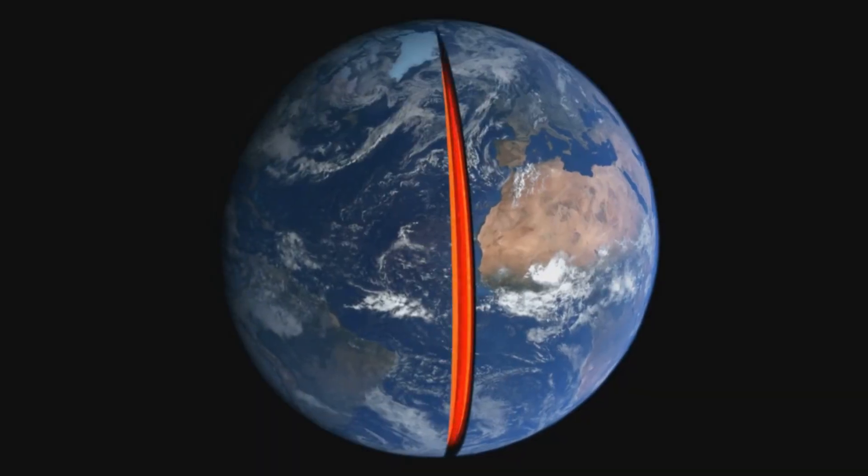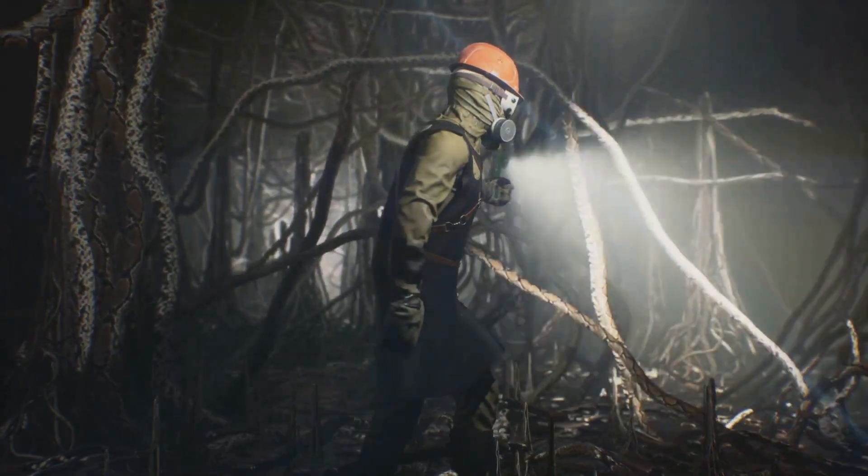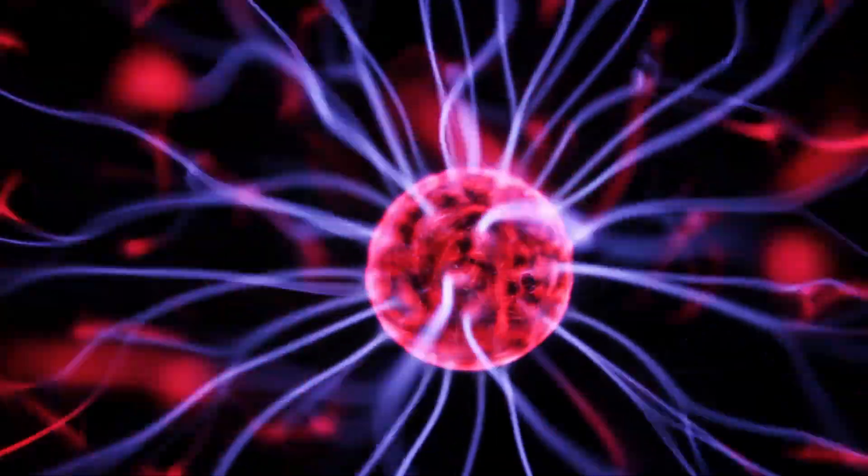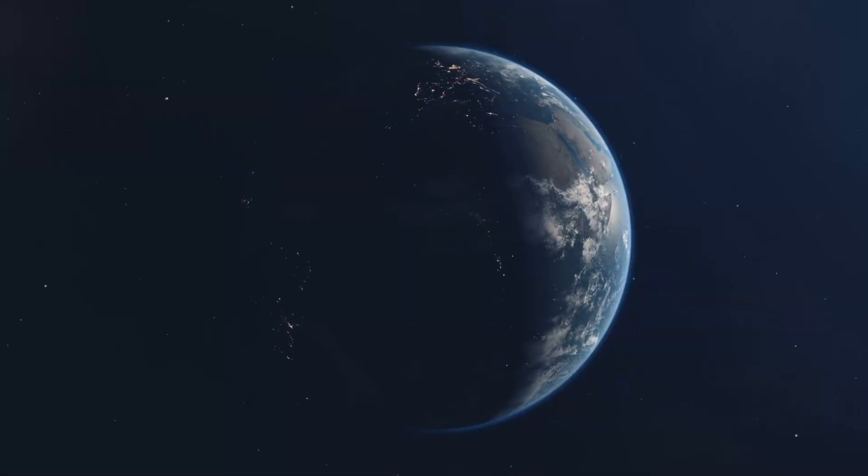To understand magnetic reversals, we must look deep inside Earth. Beneath our feet, the outer core is a churning sea of molten iron and nickel. This movement generates powerful electrical currents, Earth's geodynamo.